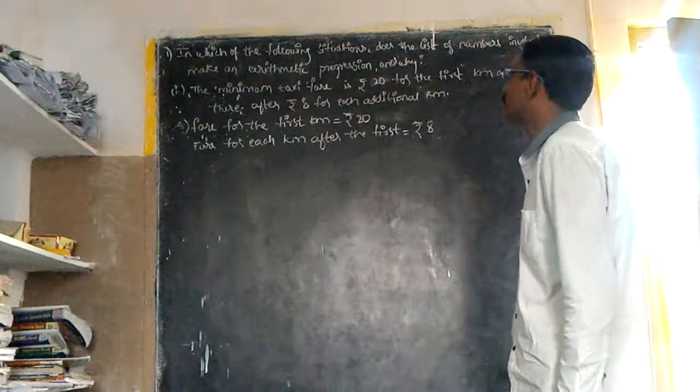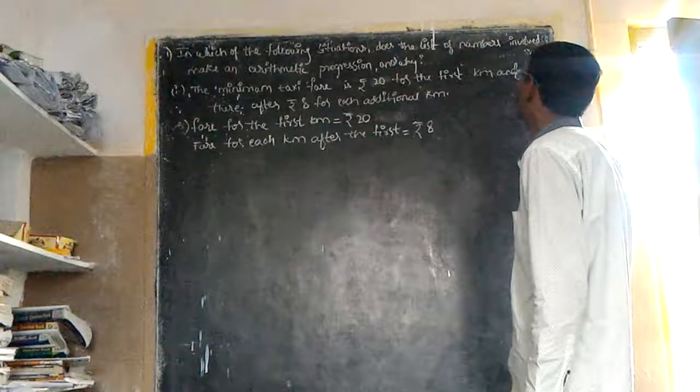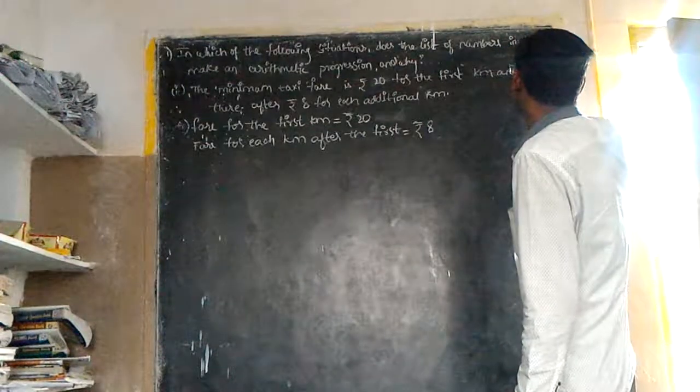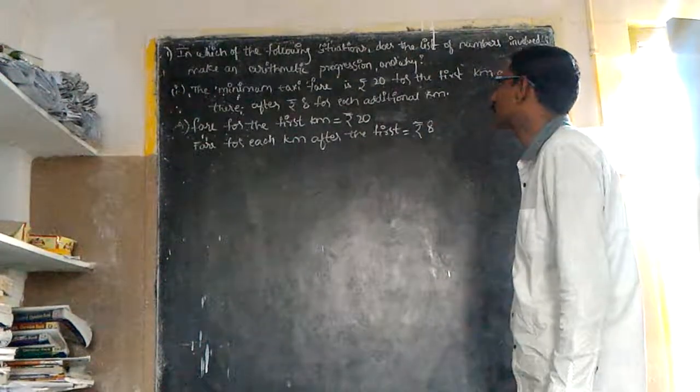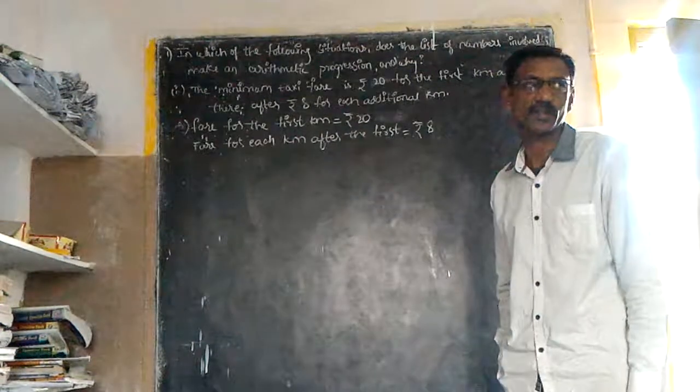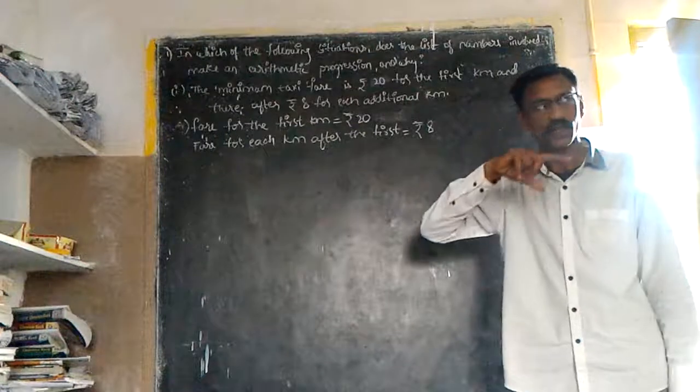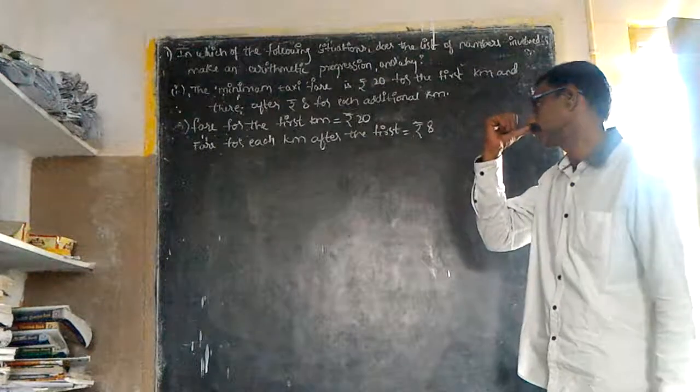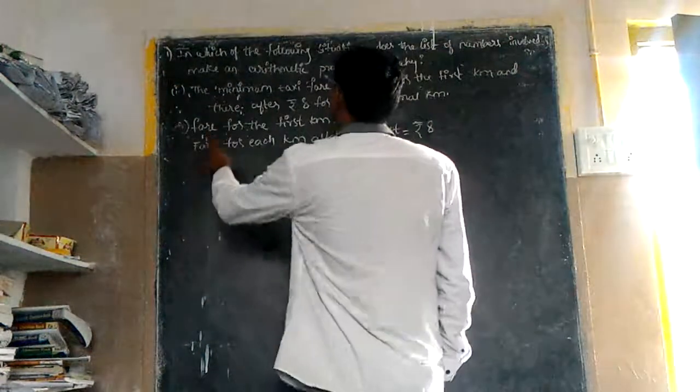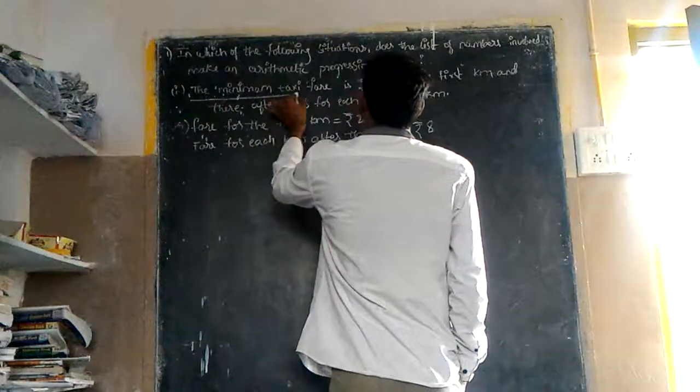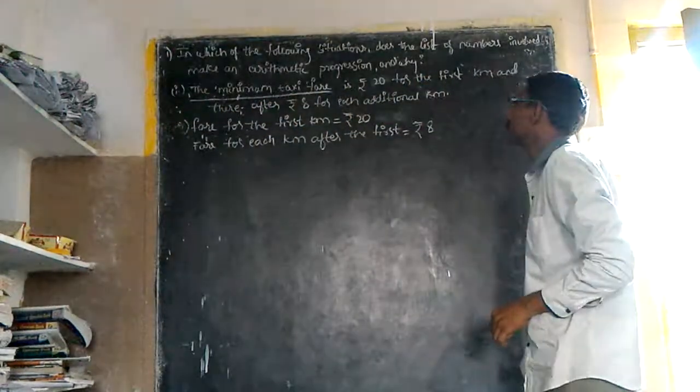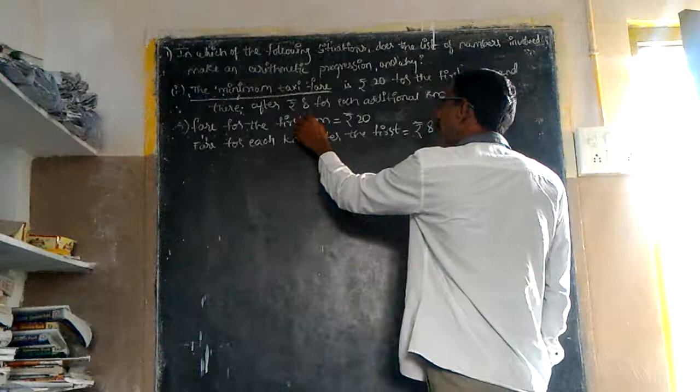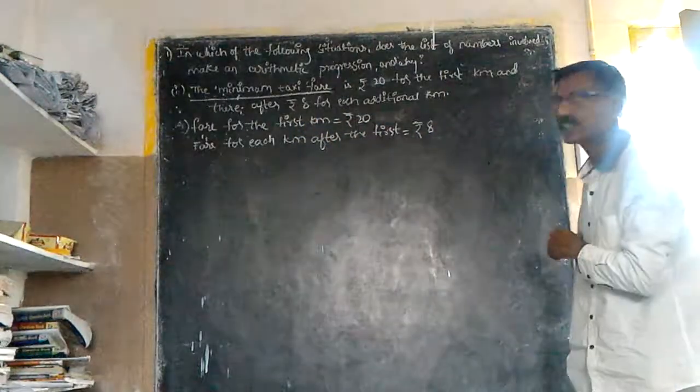In which of the following situations does the list of numbers involved make an arithmetic progression and why? The minimum taxi pay is 20 rupees for the first kilometre, thereafter 8 rupees for each additional kilometre.